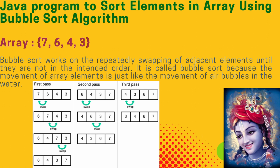In the first iteration, we compare 7 with 6. As 7 is greater than 6, we need to swap the elements. Then we increment and compare the second element with the third: 7 with 4. Again 7 is greater than 4, so we swap. Finally we compare 7 with 3, and since 7 is greater than 3, 7 needs to be swapped with 3. The biggest element, 7, is moved to the end of the array.